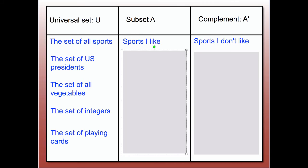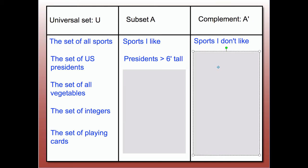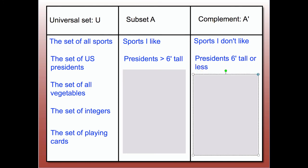If the universal set U is the set of U.S. presidents, and the subset A is the set of presidents greater than six feet tall, then the complement of A, A-prime, is the list of presidents that are six feet tall or less. Notice that when the subset is 'greater than six feet,' the complement includes six feet and everything less.